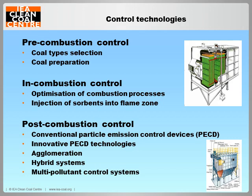PM emission control can be classified as before, during, and after coal combustion. Pre-combustion control involves choosing the type of coal and pulverising coal to the correct size. In-combustion control involves changing the burning process, for example by adjusting the combustion temperature, burning time, or boiler load, or injecting high-temperature sorbents such as limestone into the flame zone. Pre- and in-combustion control can improve the ash characteristics for downstream control technologies. To reduce PM2.5 emissions, we have to capture it after combustion.